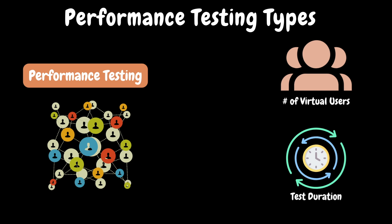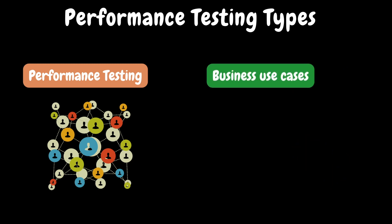During the requirements gathering, we will gather the concurrency requirements — the number of users who need to be active and do some activities in the application. In functional testing, testers will test each functionality in a sequential manner. However, in performance testing, our objective is to identify the application performance factors like speed, stability and scalability when thousands of users are actively using the application. Here, thousands of users will do the same functionality at the same time — some may be working on functionality A and some on functionality B.